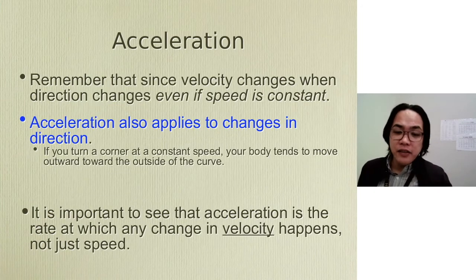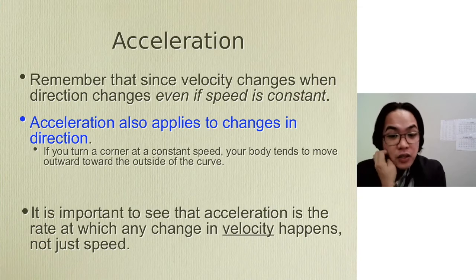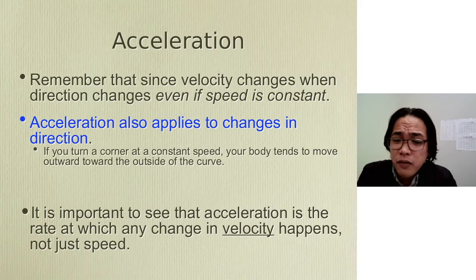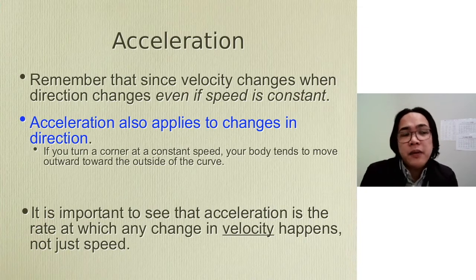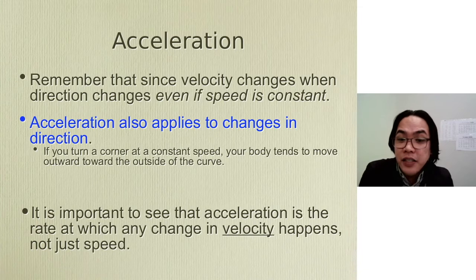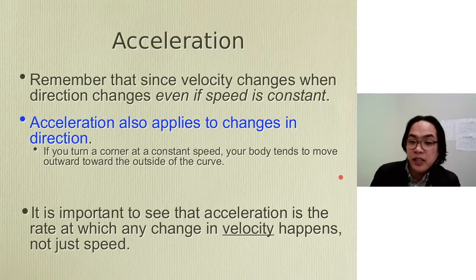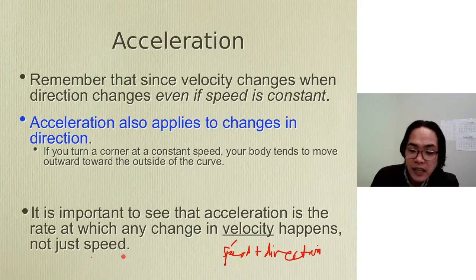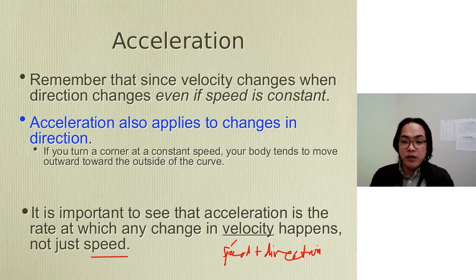Aside from the fact that acceleration relies on velocity, acceleration also deals with direction. Since velocity changes when direction changes — even if the speed is constant — acceleration also applies to changes in direction. For example, if you turn a corner at a constant speed, your body tends to move outward towards the outside of the curve. If you're moving at 50 miles per hour and you suddenly turn to the right, and your speed is not changing — it's still 50 miles per hour — acceleration is still changing because there is a change in direction. Velocity refers to speed plus direction, so that's why we will most likely be using velocity.